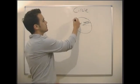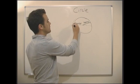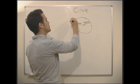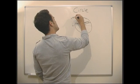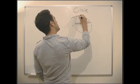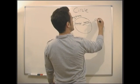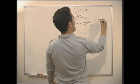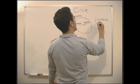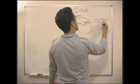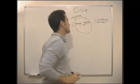OK, the distance all the way around the edge of the circle, we call the circumference. Now, basically the circumference is essentially the perimeter of the circle.